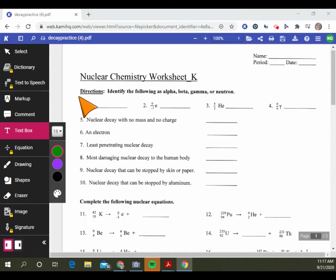When we look at the directions, identify the following as alpha, beta, gamma, or neutron. We did not talk about neutron decay because it's not part of our standards, a little above the scope of our course. So we can guess that this is a neutron.